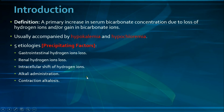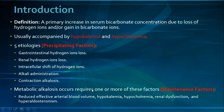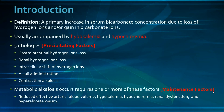In order for metabolic alkalosis to occur, we need one or more of those precipitating factors along with one or more maintenance factors: reduced effective arterial blood volume, hypokalemia, hypochloremia, renal dysfunction, or hyperaldosteronism. The precipitating factors increase serum bicarbonate concentration, whereas the maintenance factors decrease bicarbonate excretion either by increased bicarbonate reabsorption or decreased loss of bicarbonate ions.